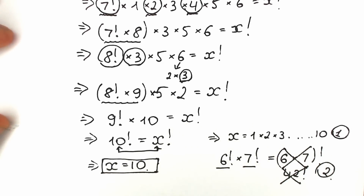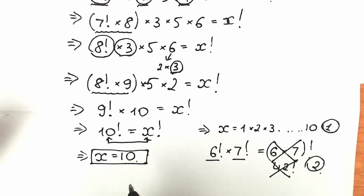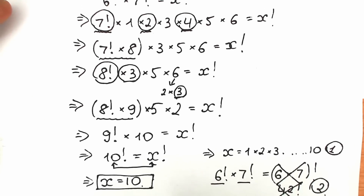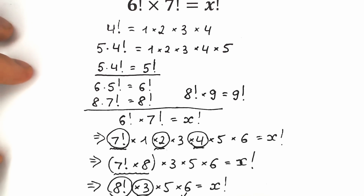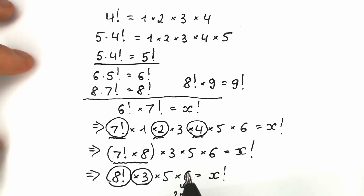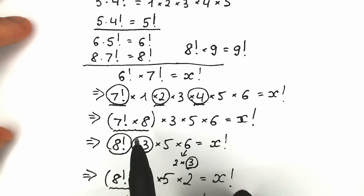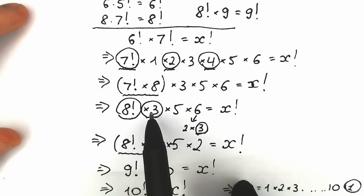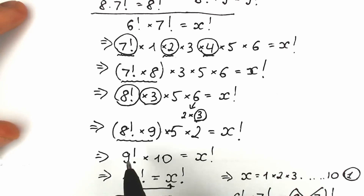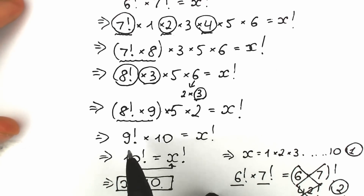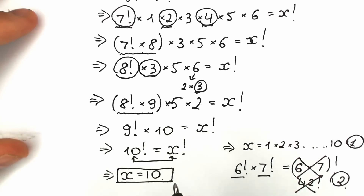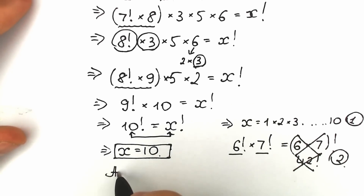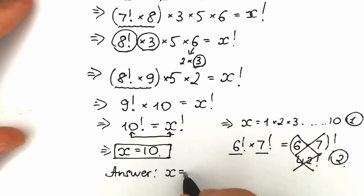The correct answer is x equals 10. I tried to explain it step by step because this is a tricky challenge for students who are beginning to learn factorials. The key property: 7 factorial times 8 equals 8 factorial; 8 factorial times 9 — where we used 3 times 3 — equals 9 factorial; and 9 factorial times 10 equals 10 factorial. So our final answer is x equals 10.